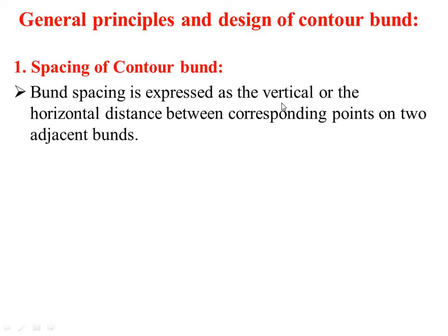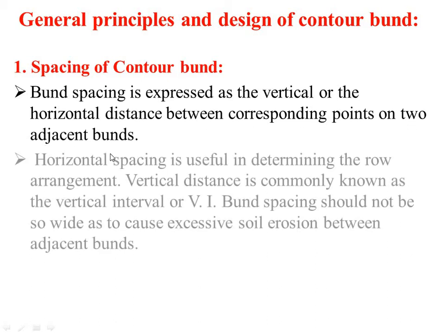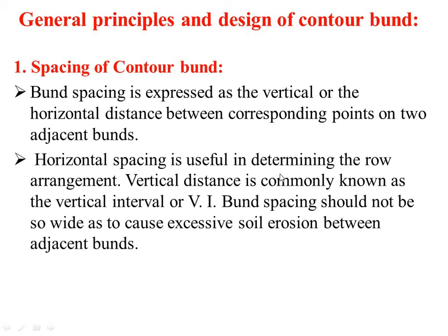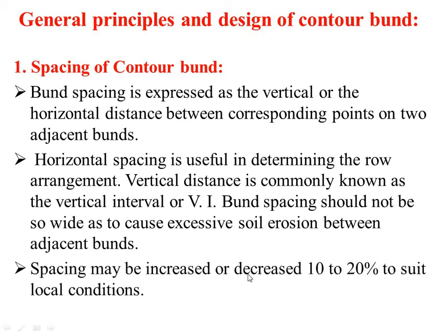Bund spacing is expressed as the vertical or horizontal distance between corresponding points on two adjacent bunds. Horizontal spacing is useful in determining the row arrangement, while vertical distance is commonly known as the vertical interval or VI. Bund spacing should not be so wide as to cause excessive soil erosion between adjacent bunds, and spacing may be increased or decreased by 10-20% to suit local conditions.